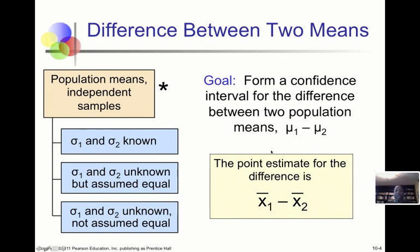We'll start by finding a confidence interval for the difference between two population means, μ₁ and μ₂. Recall the generic form of a confidence interval is: point estimate plus or minus a critical value times the standard error. Since we're interested in μ₁ minus μ₂, the point estimate is x̄₁ minus x̄₂.